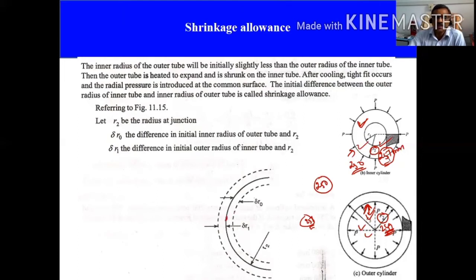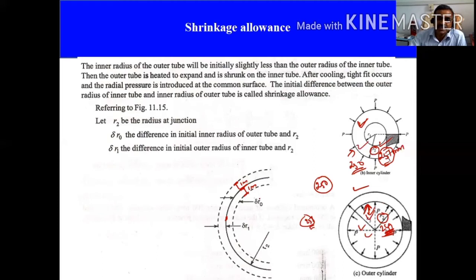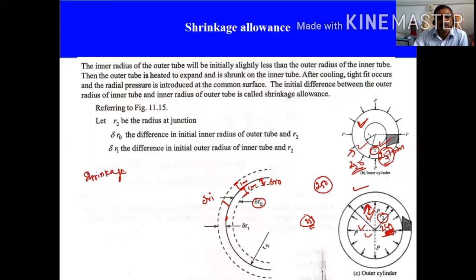In the outer cylinder, 249 became 250 — an increase of 1 mm. The inner cylinder's diameter is reduced by some amount. We call the increase in diameter of the outer cylinder delta_r_naught, and the reduction in diameter of the inner cylinder delta_r_i. Now, what is shrinkage allowance?